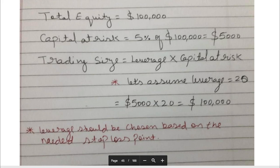For example, let's say your total equity is $100,000 and you're risking five percent of your capital, which is $5,000. If you use leverage of 20x, your trade size will be $100,000. If you use leverage of 10x, your trade size is $50,000.